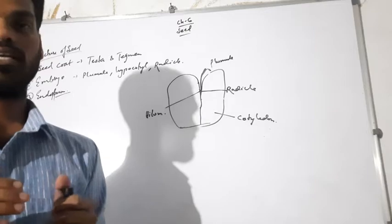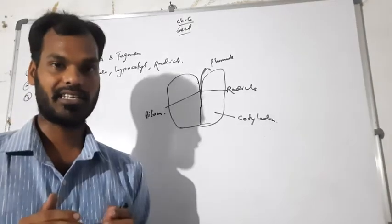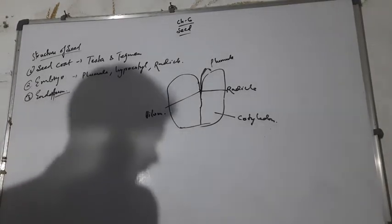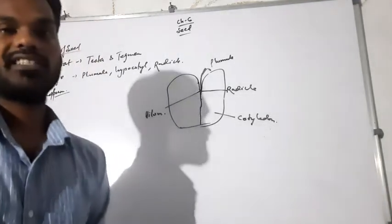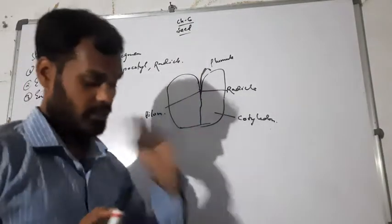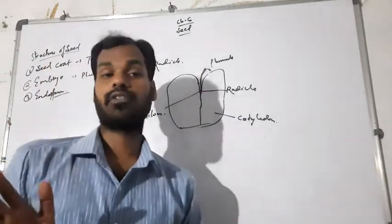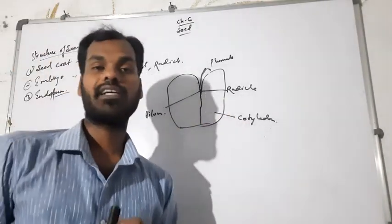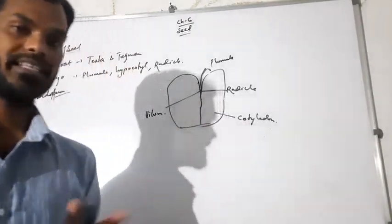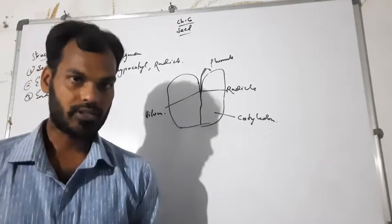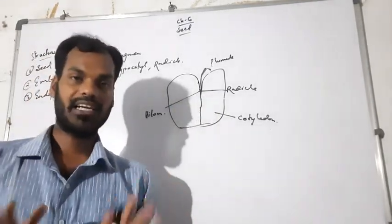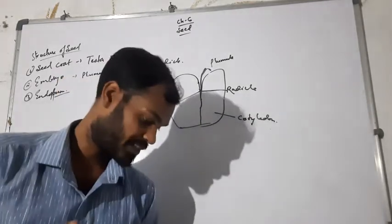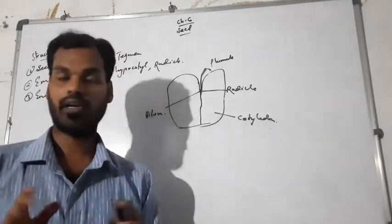Now, based on the cotyledon, we discuss the types of seeds. There are two types: monocot and dicot seeds. In monocot seeds you get only one cotyledon — examples are rice and wheat. In dicot seeds, as the name indicates, two cotyledons are present — examples include gram, pea, mango, and castor.